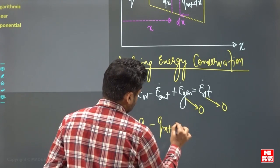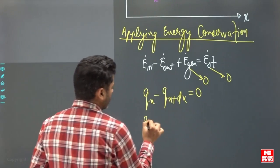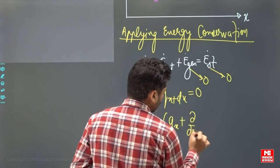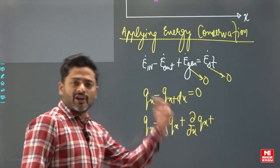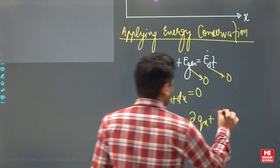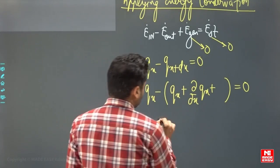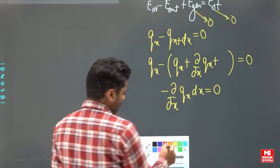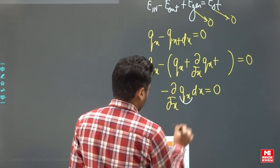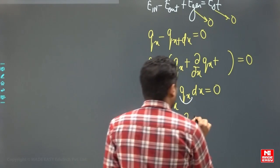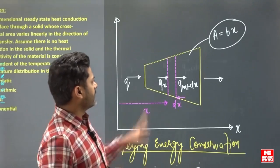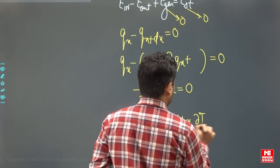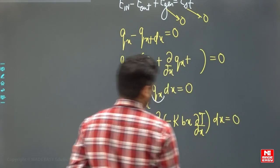So q_x minus q_{x+dx} equals zero. Expanding q_{x+dx} using a Taylor series expansion and neglecting higher-order terms, we get minus d/dx of q_x times dx equals zero. Using Fourier's law, q_x equals minus k times A times dT/dx, where A equals bx. Substituting, we get d/dx of (x times dT/dx) equals zero.